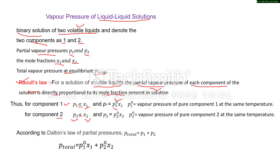P01 is the vapor pressure of pure component 1 at the same temperature — meaning when component 1 only is present, its vapor pressure is P01. In the same case, if component 2 is only present, then its vapor pressure is P02.